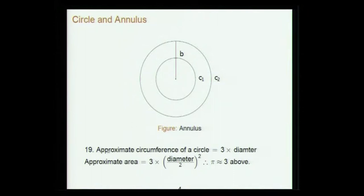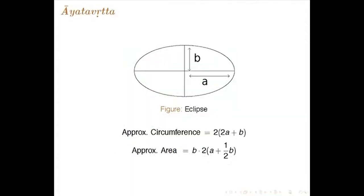The approximate circumference — even according to Mahavira it is approximate — is given as 3 × diameter. So essentially he is taking π = 3, but the approximate area is 3 × (diameter/2)². Essentially, a very crude value of π = 3 is taken.